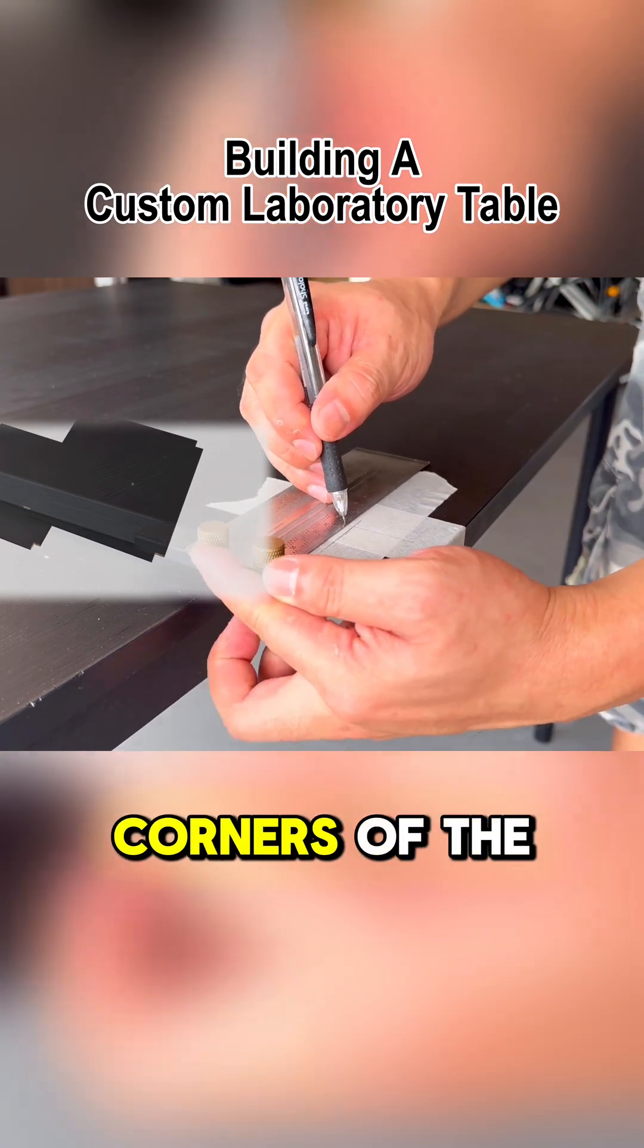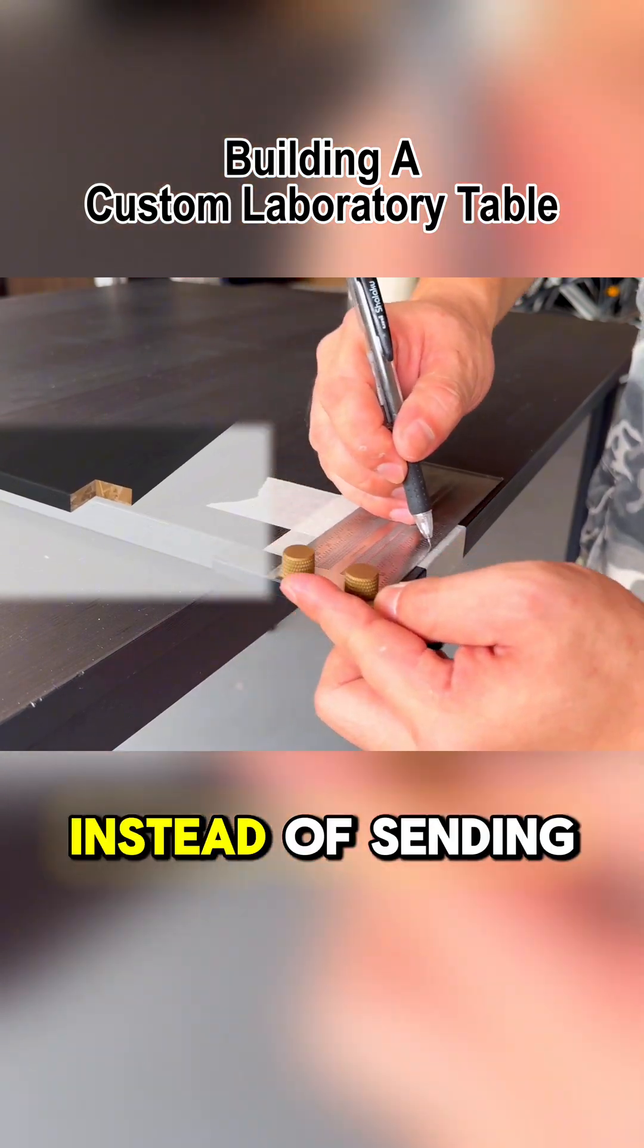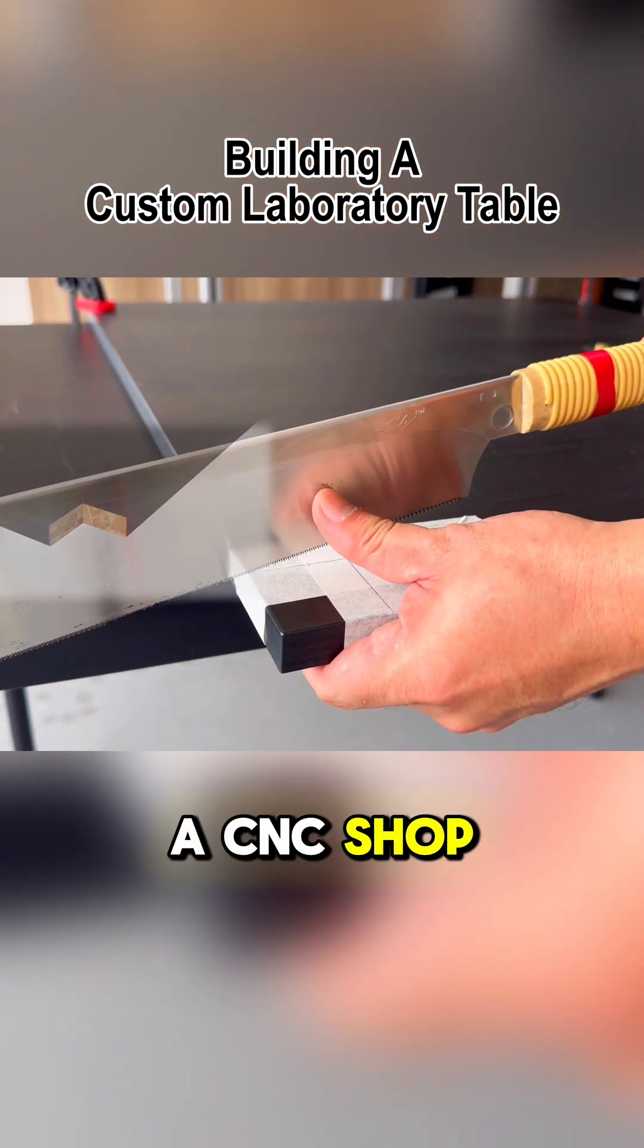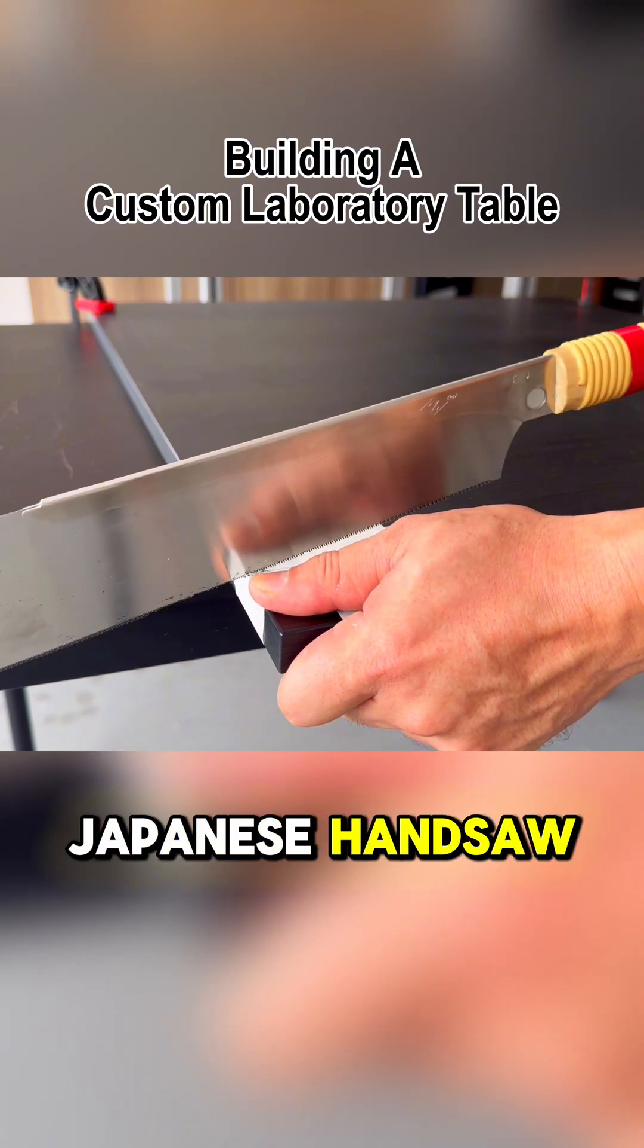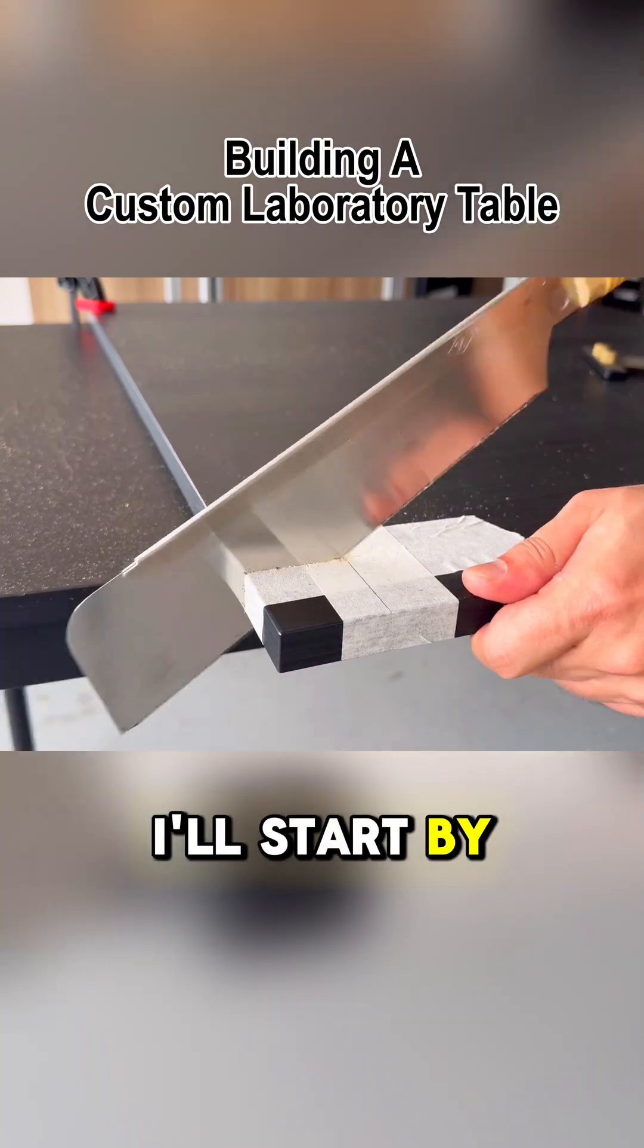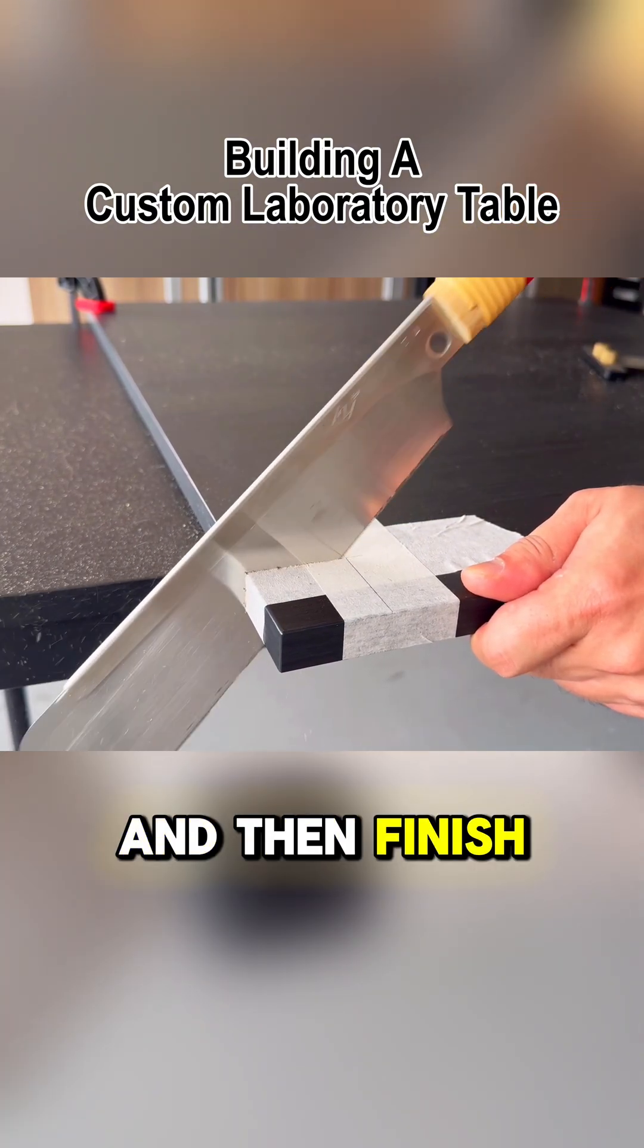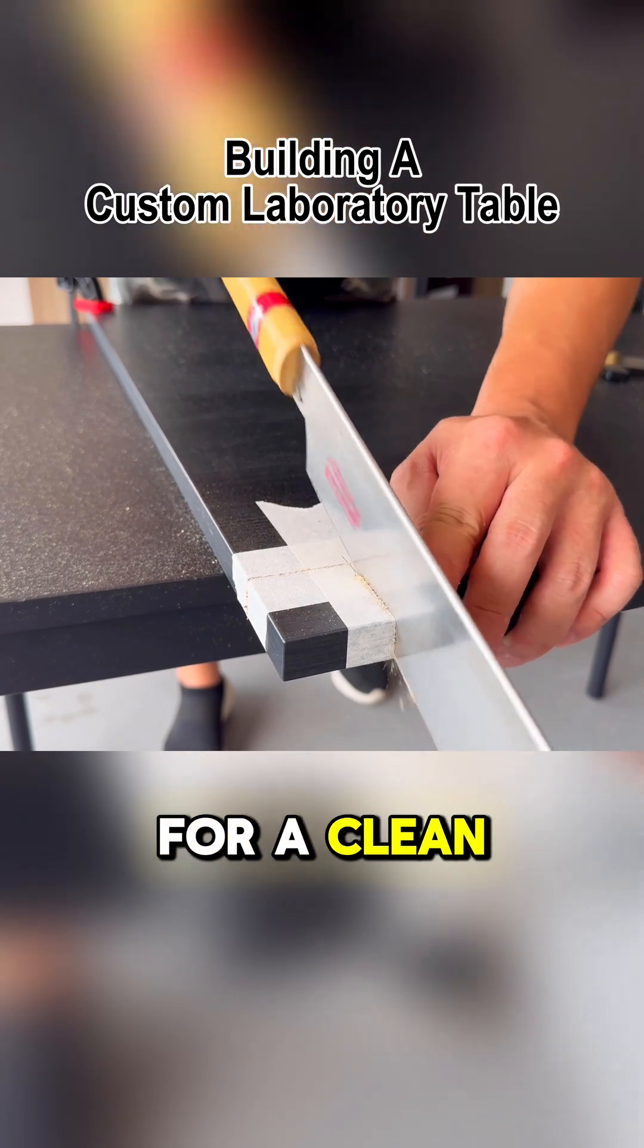We'll need to manually notch out the corners of the wood panels. Instead of sending the wood to a CNC shop, I'll show you how to do it with a Japanese handsaw. I'll start by making a rough cut and then finish it off with machine sanding for a clean, precise result.